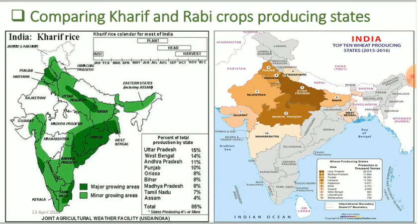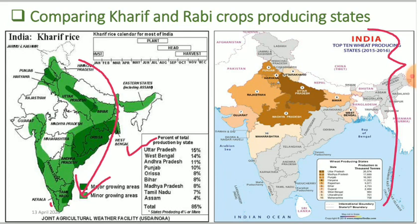In this slide we compare Kharif and Rabi crop producing states in India. All the green parts show states that produce the highest amount of rice, with Uttar Pradesh being the highest producing state. Similarly, for wheat production in 2015-16, the highest producing state is Uttar Pradesh, followed by Madhya Pradesh and Punjab. So Uttar Pradesh is the highest producing state for both Kharif and Rabi crops. Try to remember the second and third producing states as well.